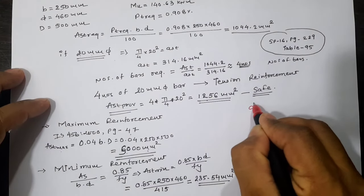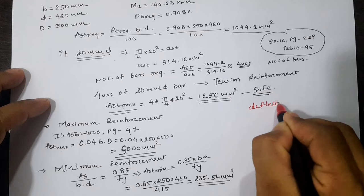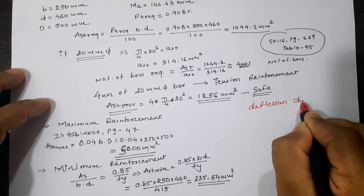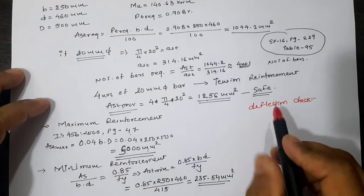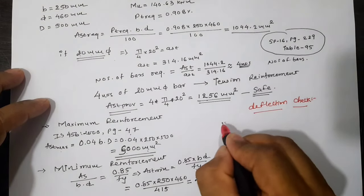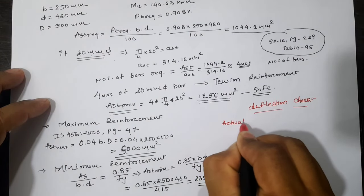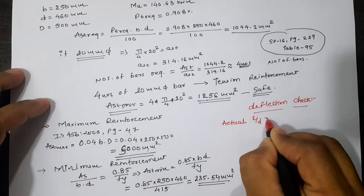Now let us check for the deflection. First of all, actual L/d ratio is 5000/460, which equals 10.87.